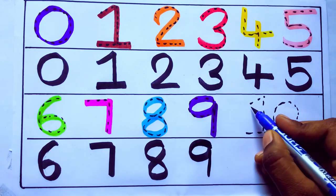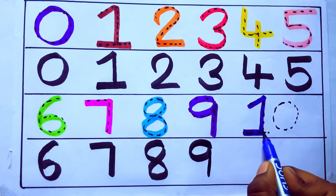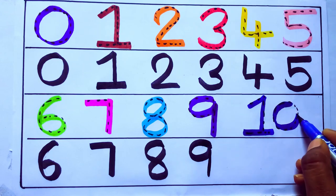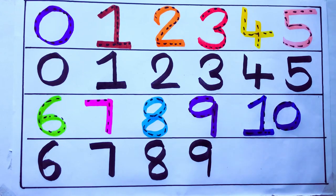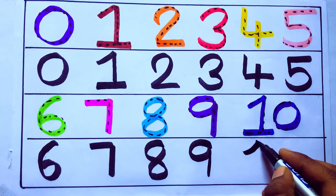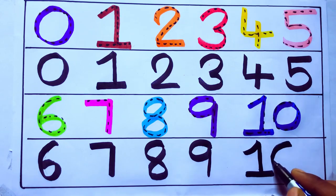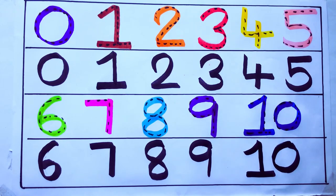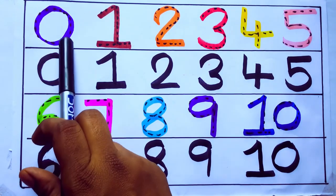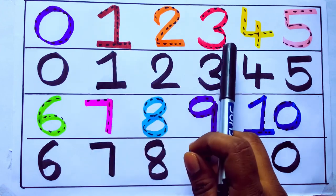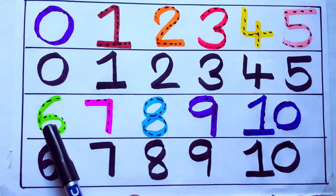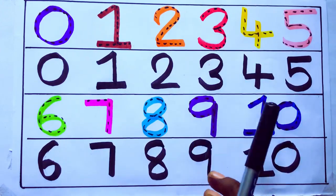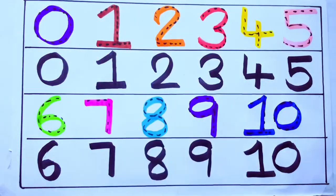Blue color 10 T, E, N, 10. T, E, N, 10. Number 10. One second learning numbers 0, 1, 2, 3, 4, 5, 6, 7, 8, 9, 10. Okay bye kids.